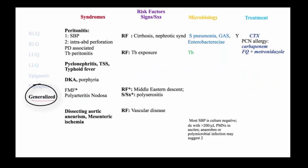Generalized abdominal pain may be caused by a variety of infectious and non-infectious pathogens. Most important among these would be those causing peritonitis. Also consider pyelonephritis. Abdominal pain can be a manifestation of systemic sepsis or metabolic disorders, including diabetes, porphyria, toxic shock syndrome, typhoid fever, and non-infectious diseases such as familial Mediterranean fever and polyarteritis nodosa.